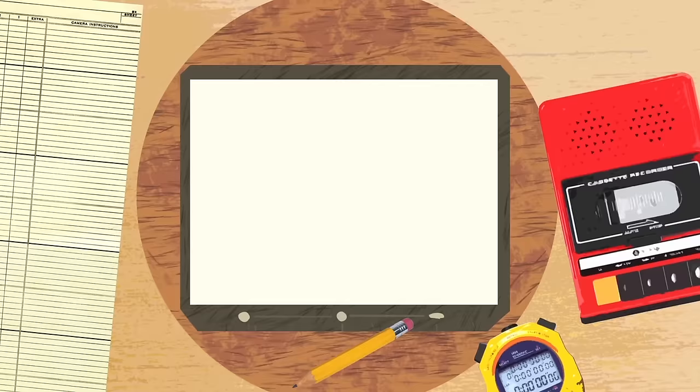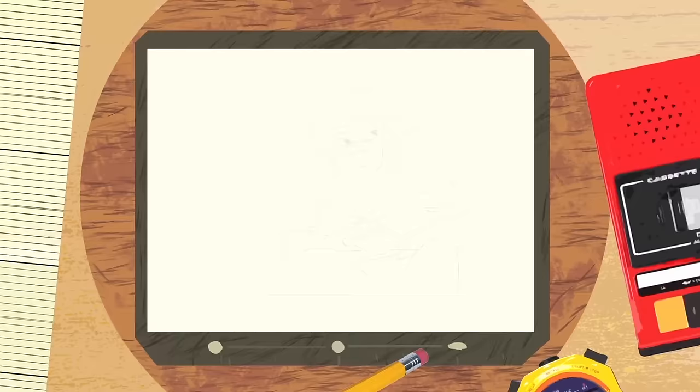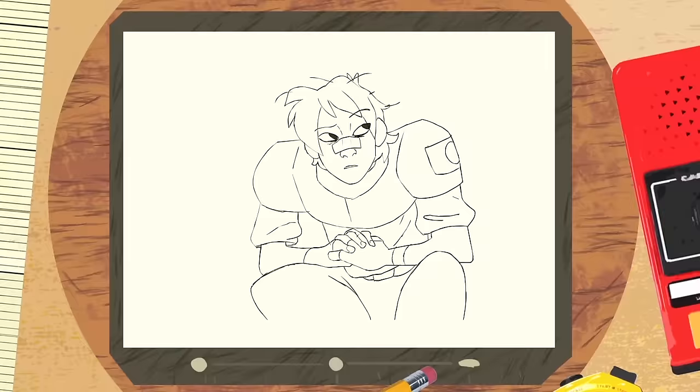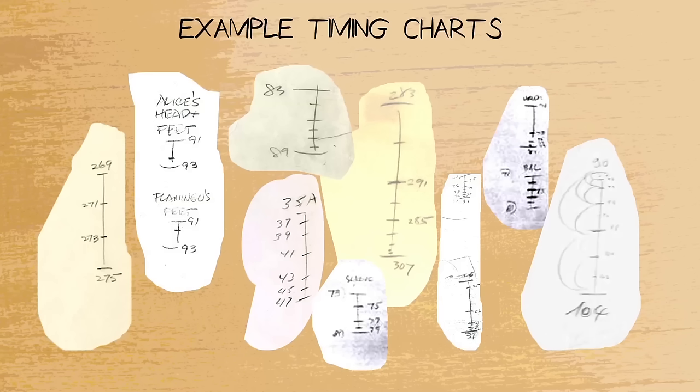When an animator finishes up his keys and breakdowns, he or she hands them off to an assistant or an in-betweener who fills in the gaps. The person tasked with in-betweening the drawings uses this chart as instructions given by the animator. The timing chart has information on how many drawings are needed to fill the in-between, how far each drawing should be spaced from each other.